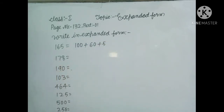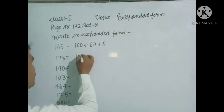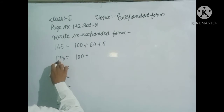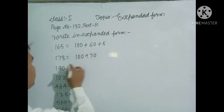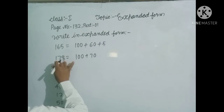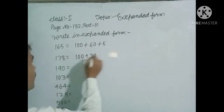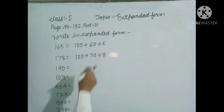In the next question, the hundreds digit is 1, so write down 100. The tens digit is 7 tens, that means 70. And the ones digit is 8 ones, that means 8. In this way you write it down.